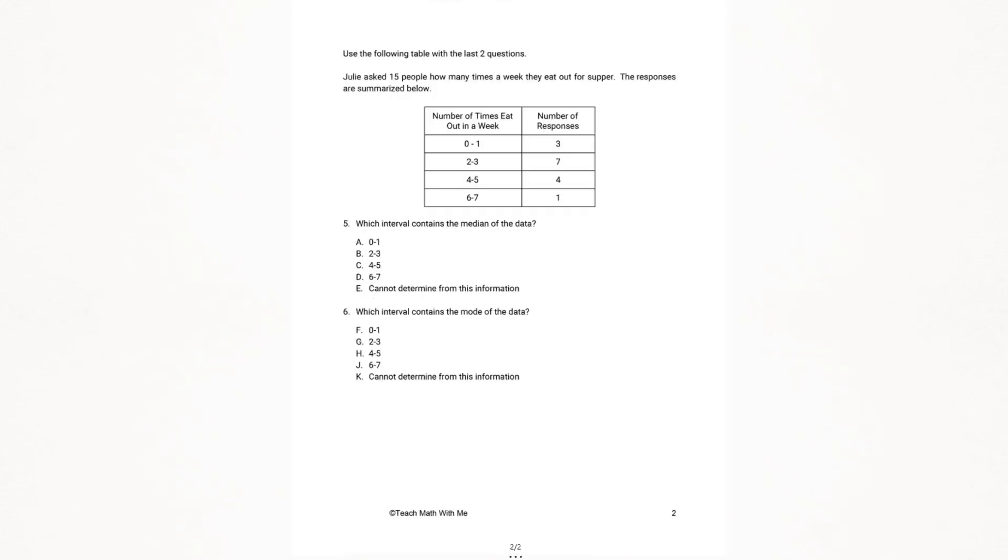Let's take a look at the last two questions on the next sheet. Here we're given a table that we're going to have to use to answer the last two questions. Julie asked 15 people how many times a week they eat out for supper. The responses are summarized below. Let's look at number five. Which interval contains the median of the data? Again, median, we're looking for the middle position. We know that 15 people were questioned. So 15 is odd. And we can find that middle position. We know that there's seven on one side, seven on the other. So the eighth position is going to be our median.